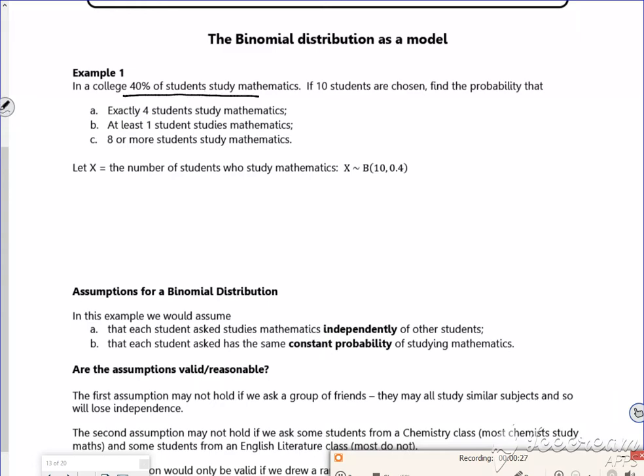So it says in college 40% of students study maths, so that's your success, and 10 students are chosen at random, so that's your n. So x is the number of students who study maths, so I've defined it, and there's my distribution. The x follows a binomial with the parameters that n is 10 and p is 0.4.